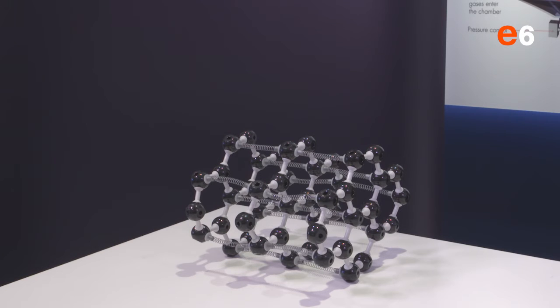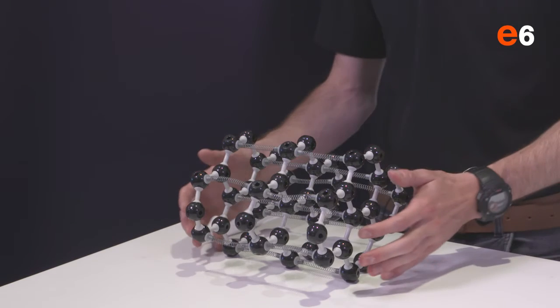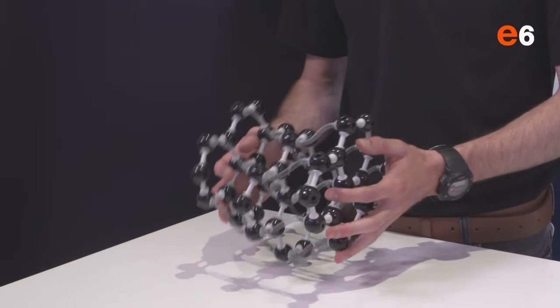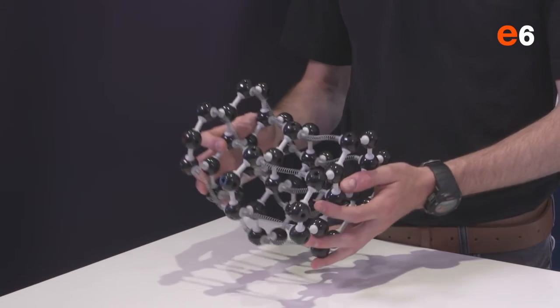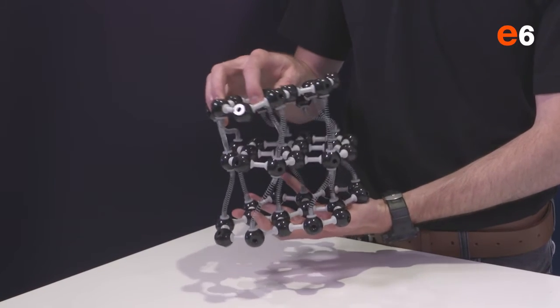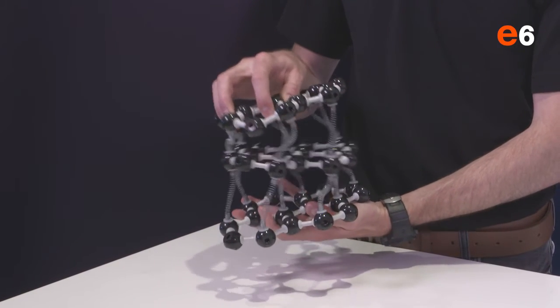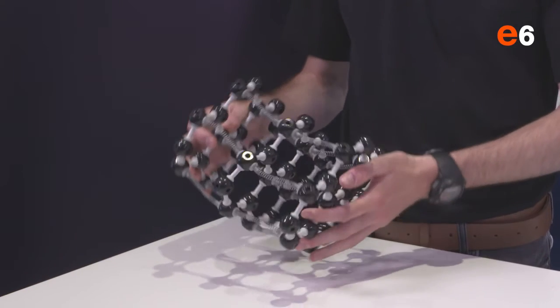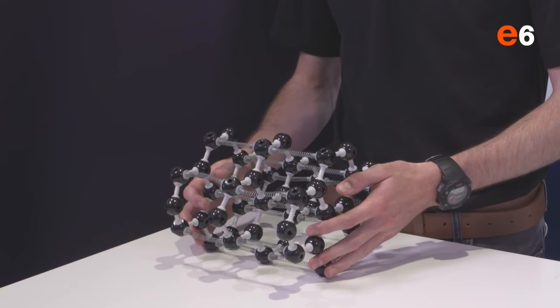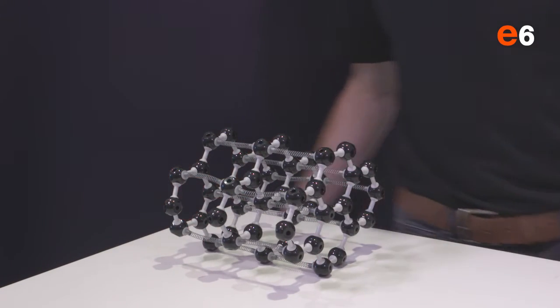The reason graphite is so soft is linked to its structure. This model shows the structure of graphite. In the model, the black balls are the carbon atoms. They form a sheet of atoms connecting to three other carbon atoms. The spare electron holds together multiple sheets with weak bonds which are represented here by the springs in this model, making graphite a very soft material.